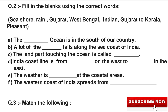The words given in the box are: Seashore, Rain, Gujarat, West Bengal, Indian, Gujarat, Kerala, Pleasant. We need to fill in the correct word in each blank. A: The blank Ocean is in the south of our country. The answer is Indian. The Indian Ocean is in the south of our country. B: A lot of blank falls along the sea coast of India. The answer is Rain.